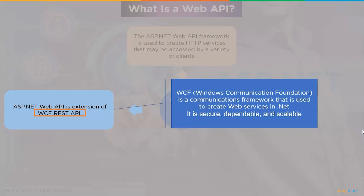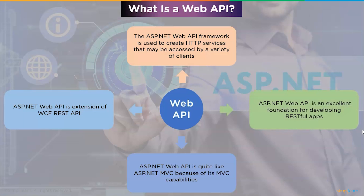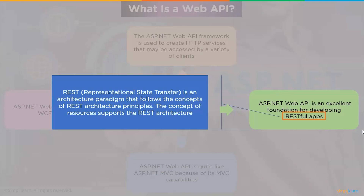WCF stands for Windows Communication Foundation, a communication framework used to create web services in .NET. It is secure, dependable, and scalable, and offers a uniform programming model for service-oriented application development. ASP.NET Web API is quite similar to ASP.NET MVC because of its MVC capabilities like routing, controllers, action results, filters, model binders, IoC container, and dependency injection. RESTful apps follow the representational state transfer architecture principles, using resources identified by URLs to express application state and functionality over HTTP.